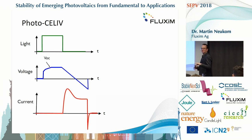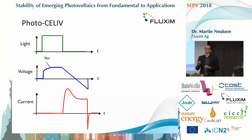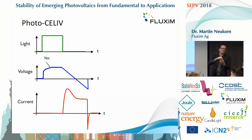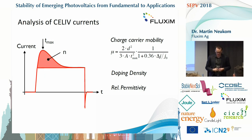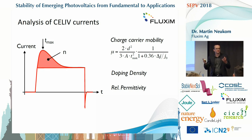Let's now talk about photo-CELIV. The idea is that you create some charge carriers inside your device, keep the device at VOC so the charge carriers cannot escape, and then run a negative voltage ramp. What you get is a constant displacement current because your device has a certain capacitance. If there are charge carriers inside the device, you get an additional overshoot. From analyzing this current — specifically the peak time — you can calculate the charge carrier mobility using a simple formula.